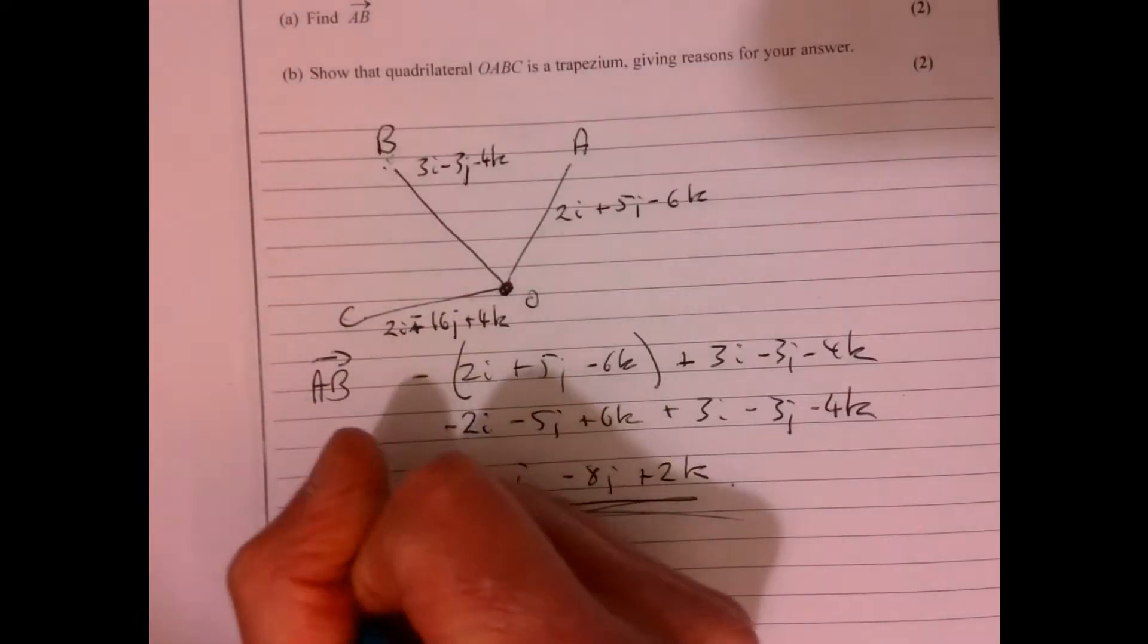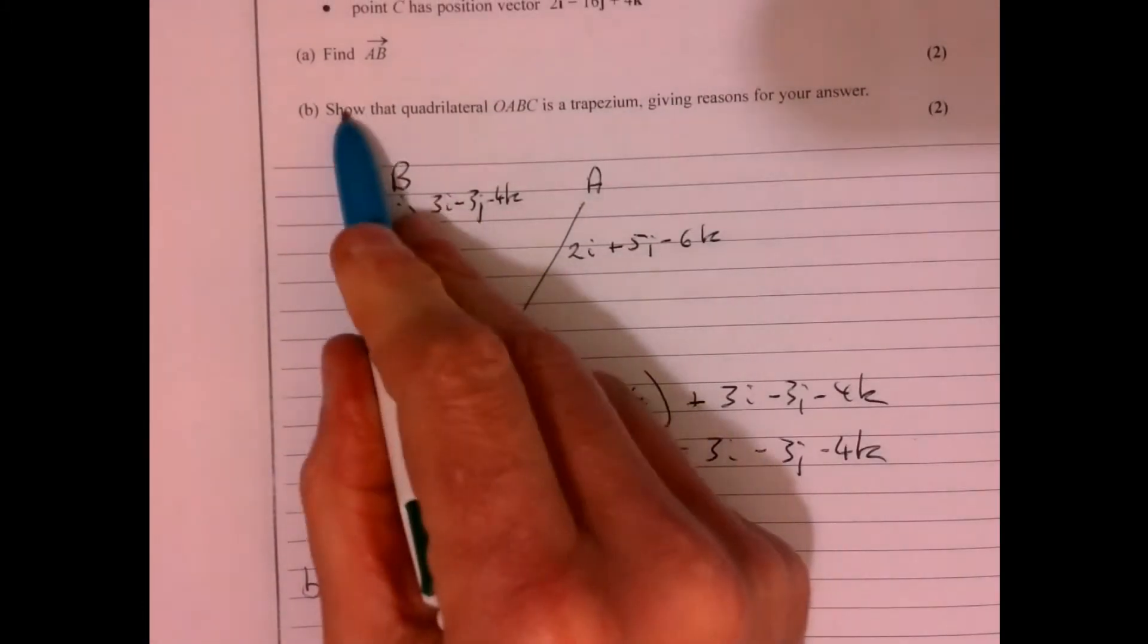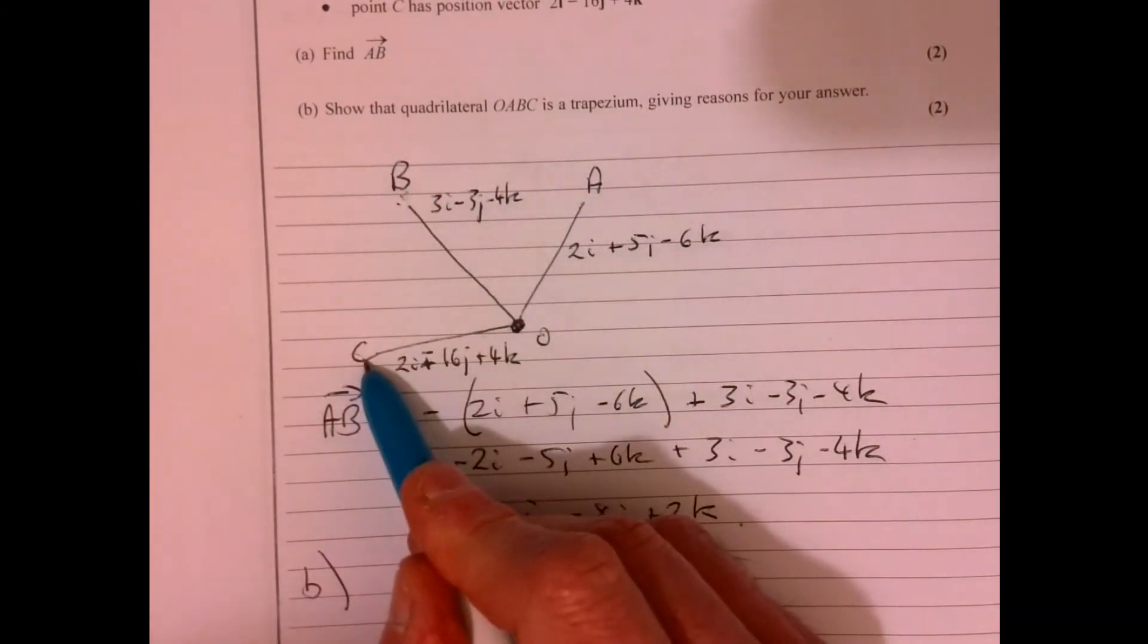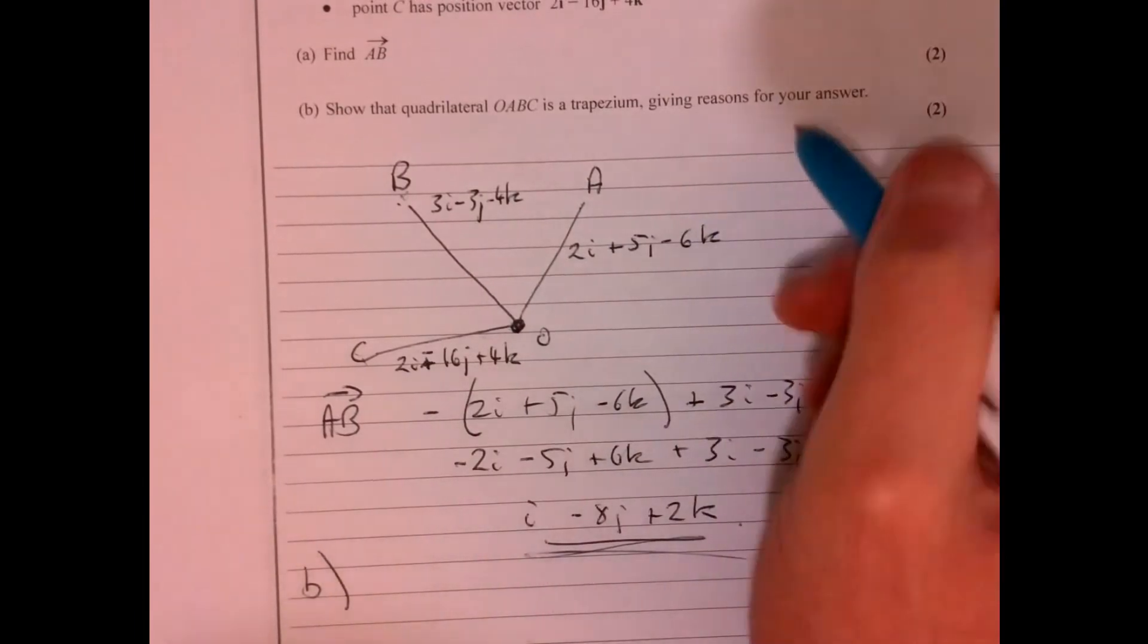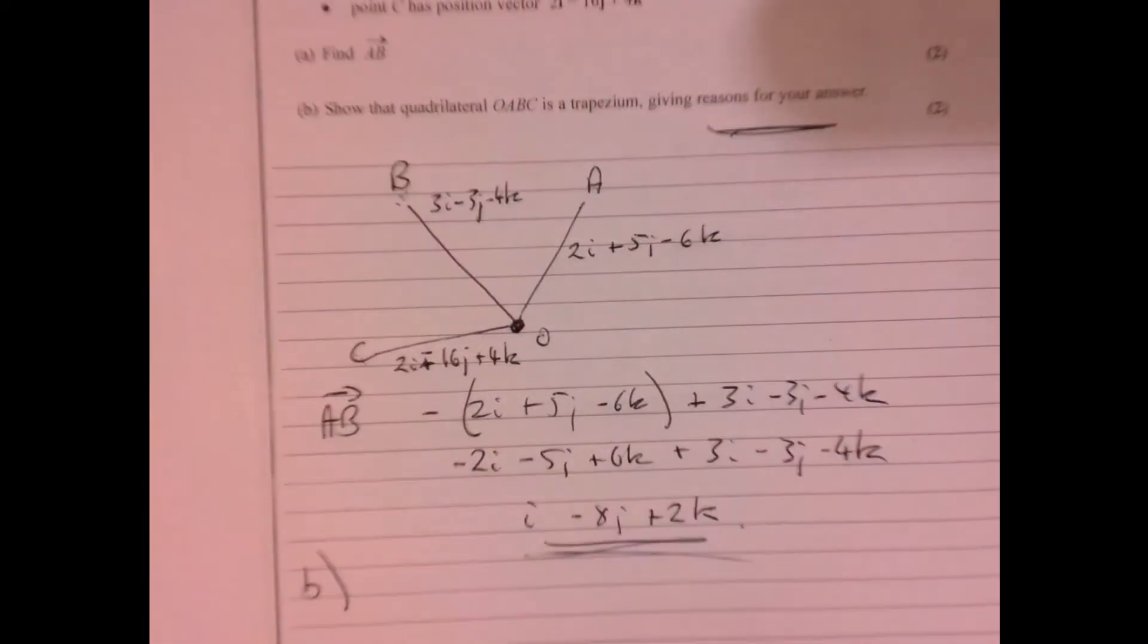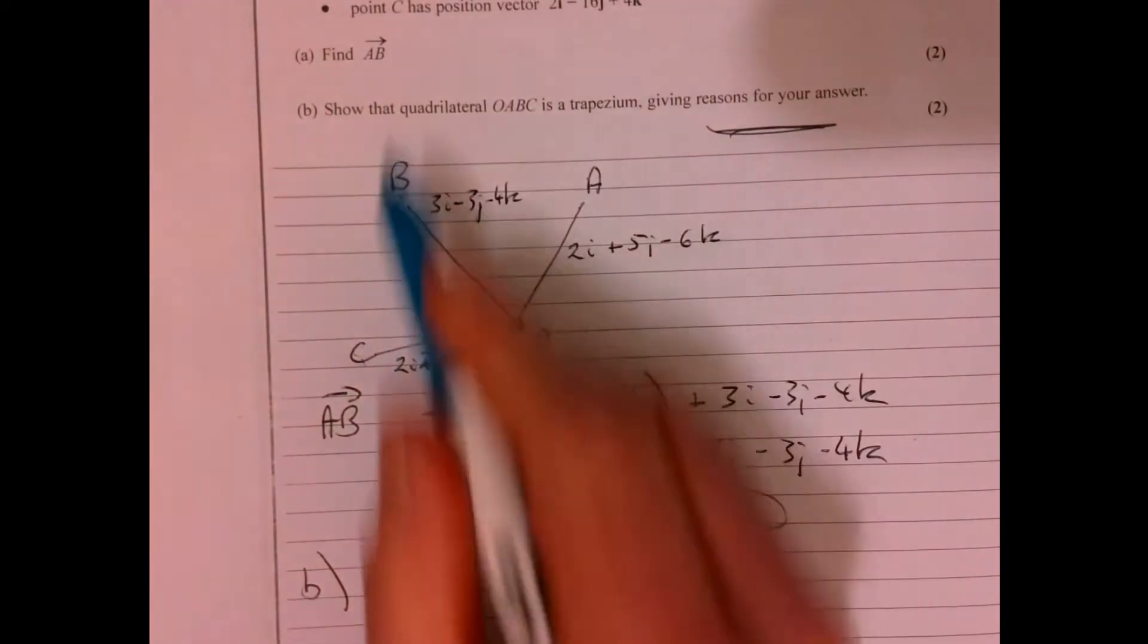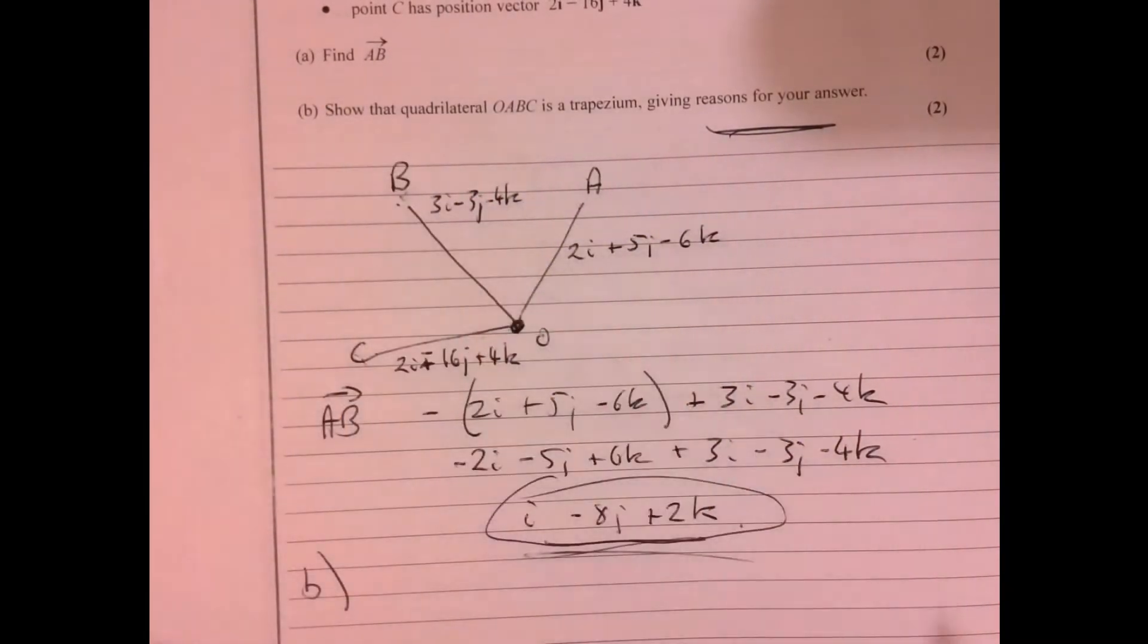Part B says show that quadrilateral OABC is a trapezium, giving reasons for your answer. So I'm going to think about why have we just worked this out. Why is it leading me through? There's always a reason why it's told me to do that.